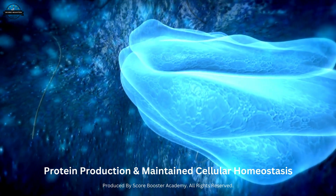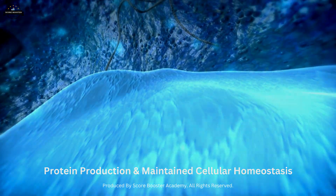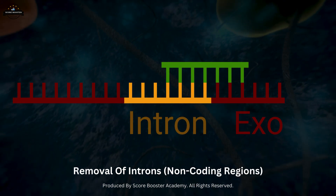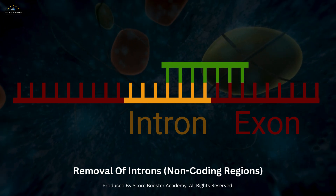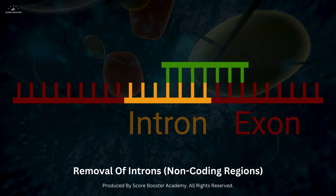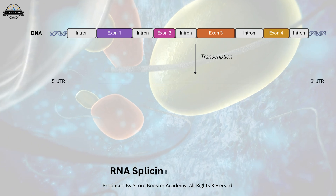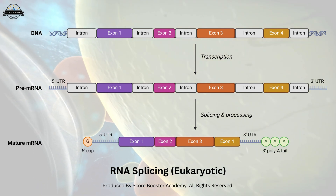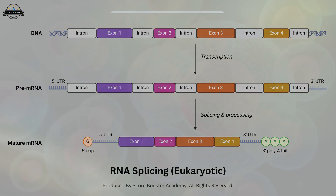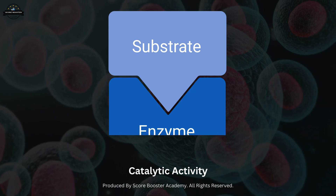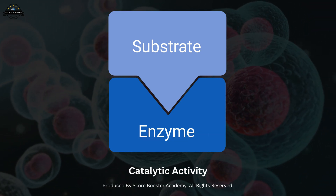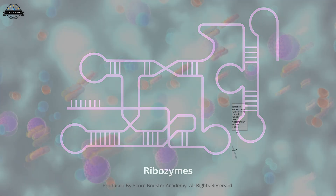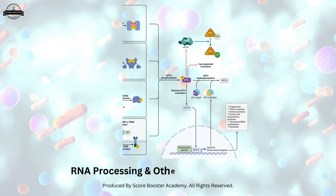In eukaryotic cells, pre-mRNA undergoes splicing. This process involves the removal of non-coding regions called introns, and the remaining exons are then joined together, resulting in the formation of a mature mRNA molecule. The splicing process is intricate and highly regulated, orchestrated by small nuclear ribonucleoproteins and other components of the spliceosome. Remarkably, some RNA molecules exhibit catalytic activity, capable of catalyzing biochemical reactions similar to enzymes. These special RNA molecules are known as ribozymes, and they play essential roles in RNA processing and other cellular processes.